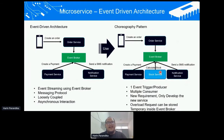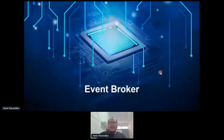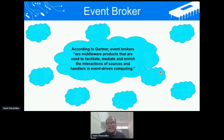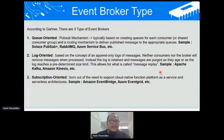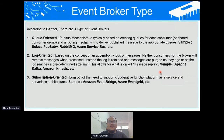We already know that using event-driven architecture requires a system called an event broker. What is an event broker? According to Gartner, it is middleware that facilitates the transformation and interaction of sources of events and handlers in event-driven computing. There are three types of event brokers according to Gartner. The first one is queue-oriented, which is based on a queue and topic mechanism — you publish the message, create a queue for the consumer, and route the message from producer to consumer. Examples include Solace PubSub+, RabbitMQ, MQTT, and Azure Service Bus.